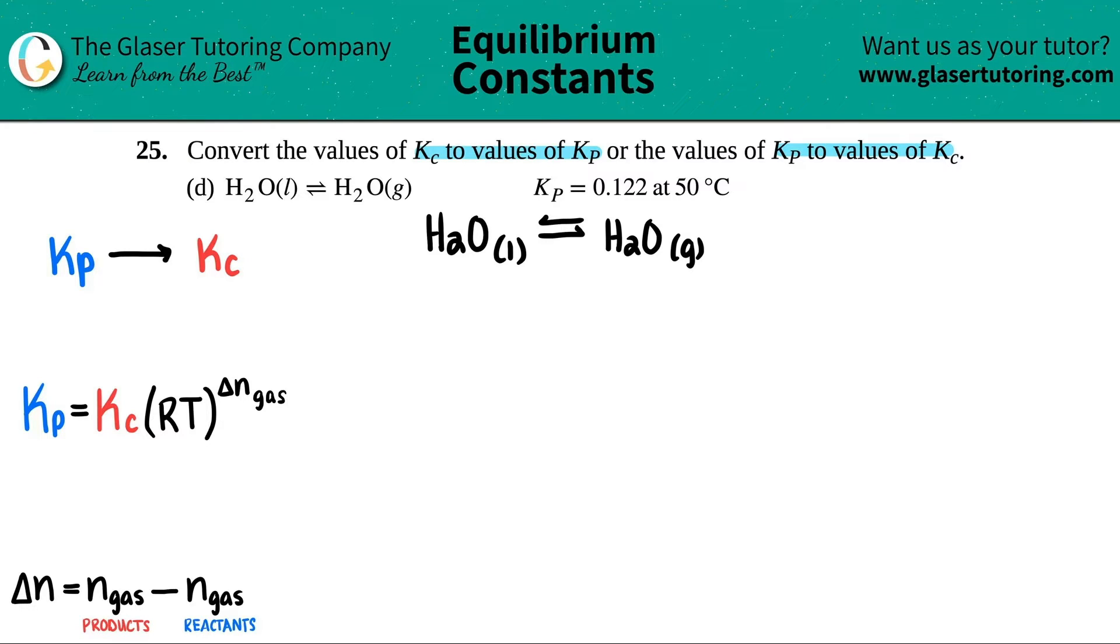So they gave us the Kp value. They told us that this was 0.122. We're solving for Kc, so I'm just going to put this as X. Now the R value is a standard value, and there's two R values in chemistry: 0.0821 and 8.314. If you're using pressures and gases, which is what we're using here, we're going to use the 0.0821. Remember the 8.314 is only used for energy.